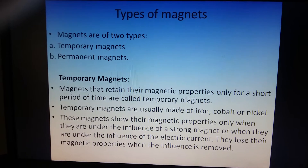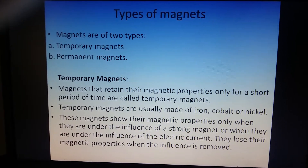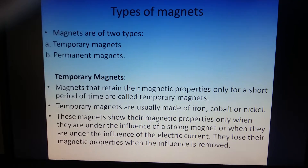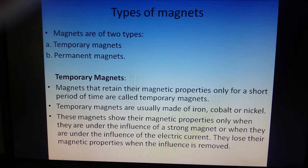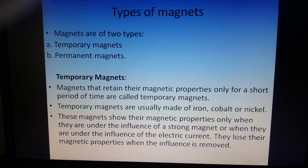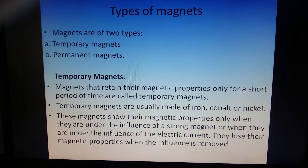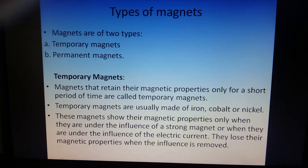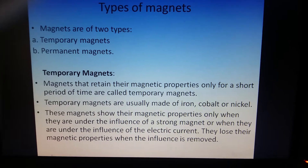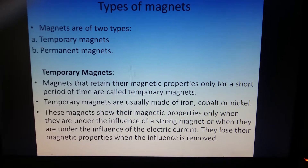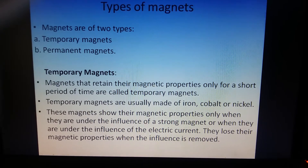In the end, we studied the types of magnets. There are two types: temporary and permanent magnets. Temporary magnets retain their magnetic property only for a short time. They can be made of iron, cobalt, or nickel and show their magnetic property only when under the influence of a strong magnet. If the strong magnet is removed, their magnetic property also goes away.